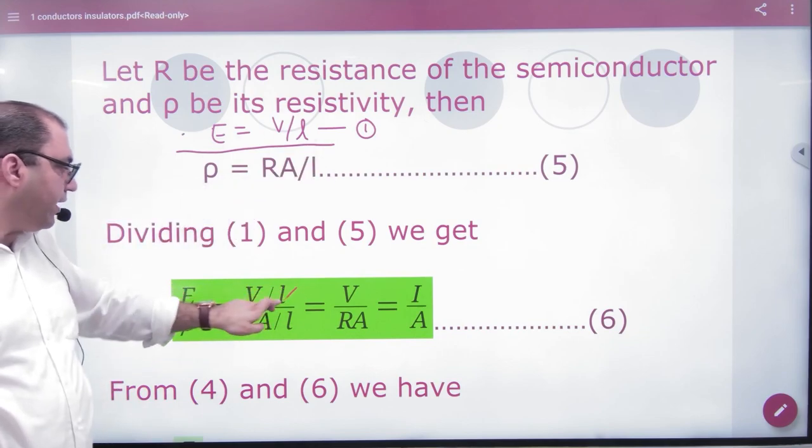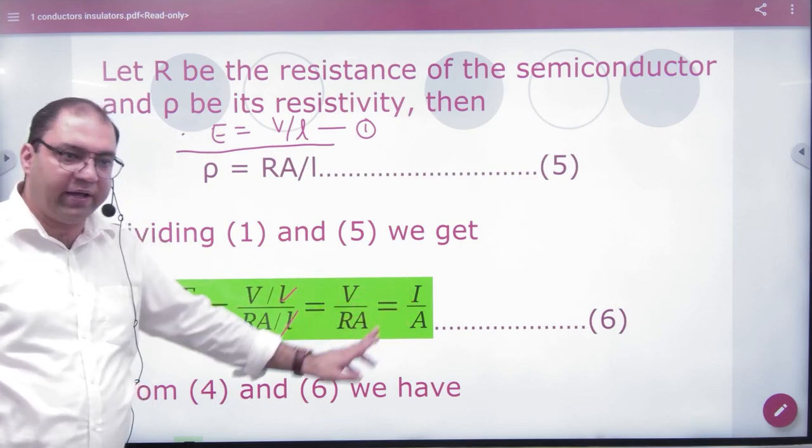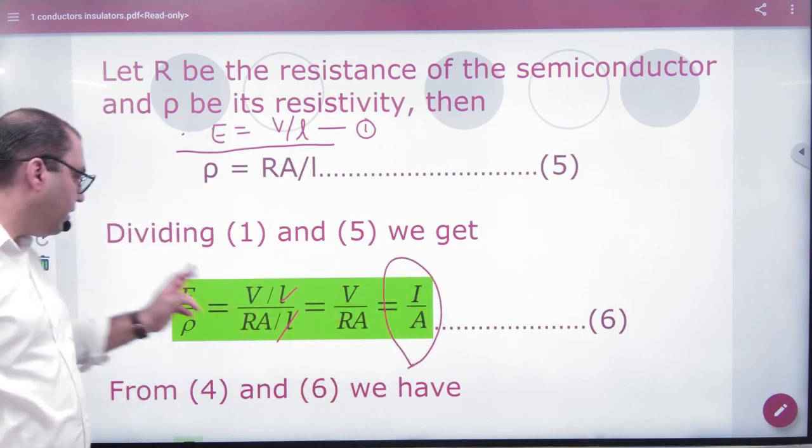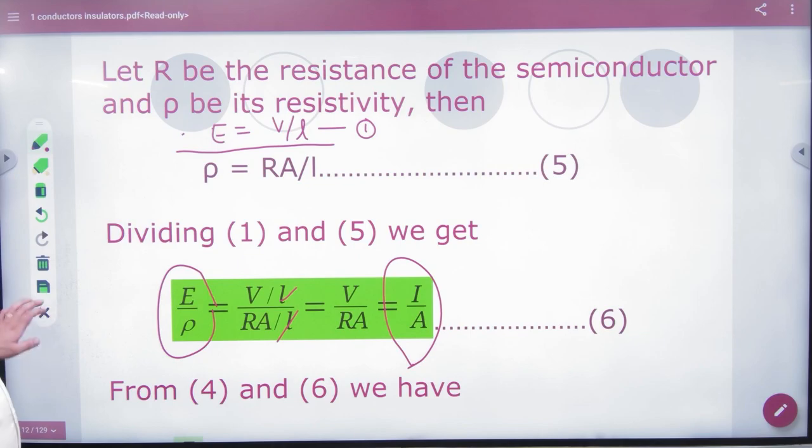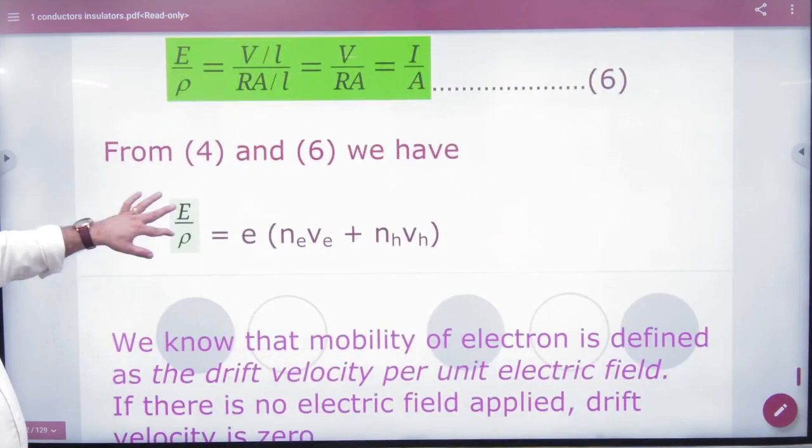So L to L what is cancelled, so what is V by RA? V by R what is I by A, so I by A what is E by rho. So I by A put E by rho.